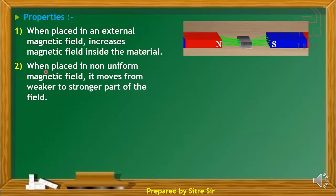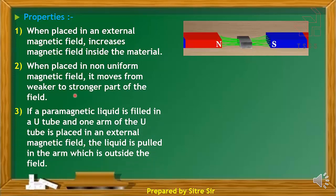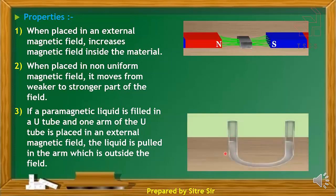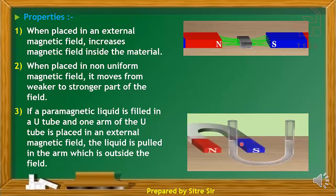When placed in a non-uniform magnetic field, a ferromagnetic substance moves from the weaker to the stronger part of the field. If a magnetic liquid is filled in a U-tube and one arm of the U-tube is placed in an external magnetic field, the liquid is pulled toward the side which is inside the magnetic field.